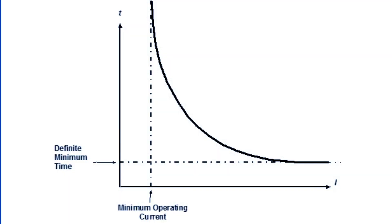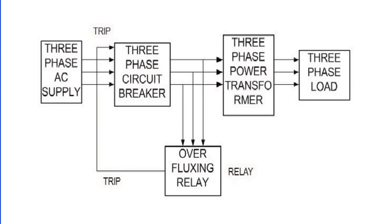Next, we have over-fluxing protection. Over-fluxing, or over-excitation, can cause overheating and core saturation to the transformer. This is where an over-excitation relay comes in handy, preventing transformers from operating at excessively high voltage or too low frequency.